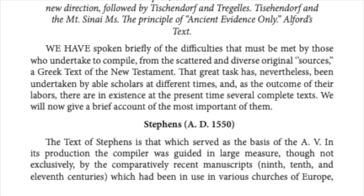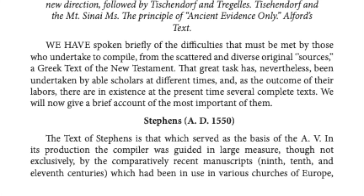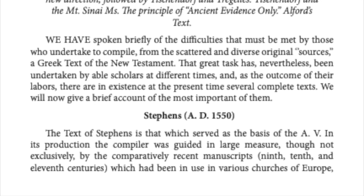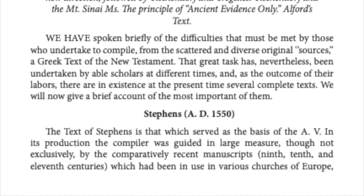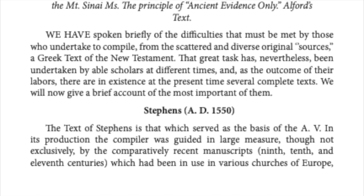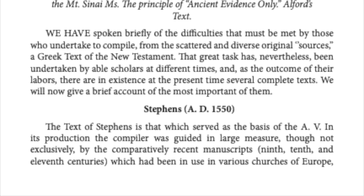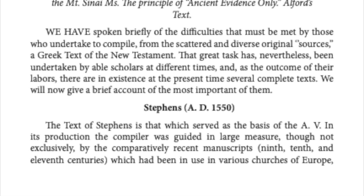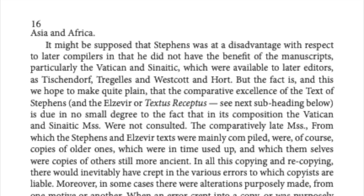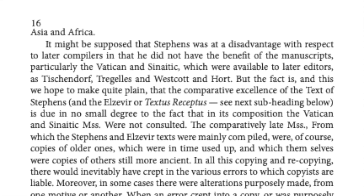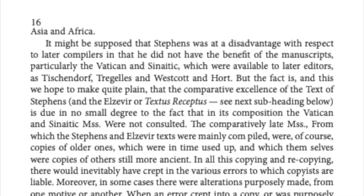Stevens, AD 1550. The text of Stevens is that which served as the basis of the Authorised Version in its production, and the compiler was guided in large measure, though not exclusively, by the comparatively recent manuscripts of the 9th, 10th, and 11th centuries, which had been in use in various churches of Europe, Asia, and Africa.